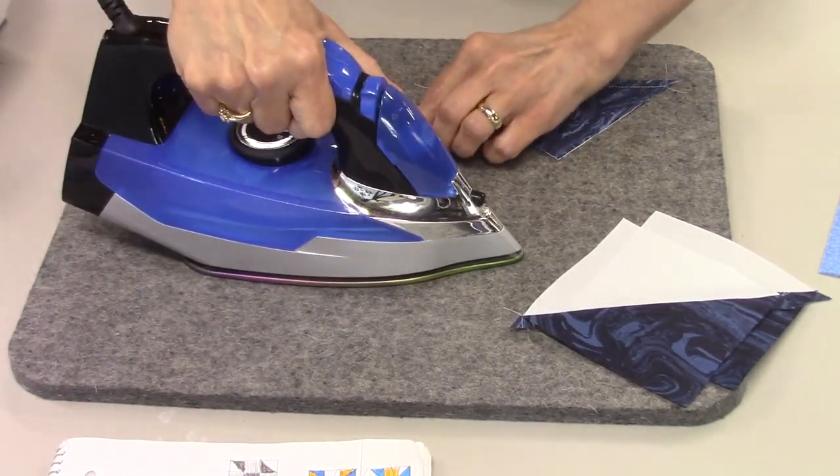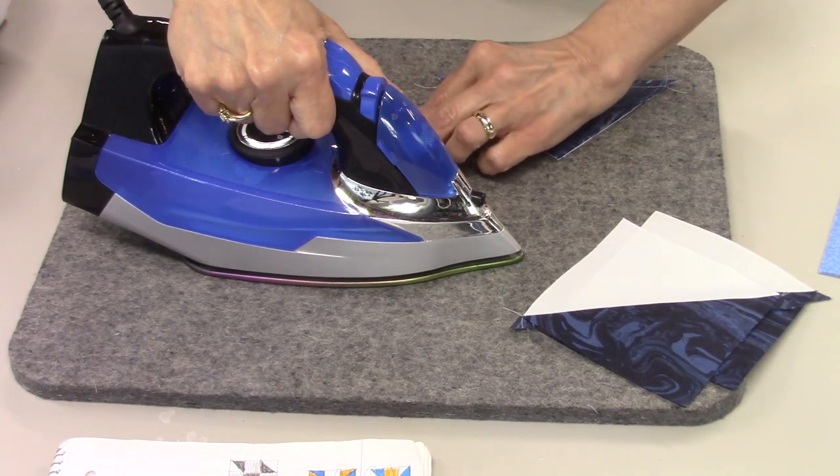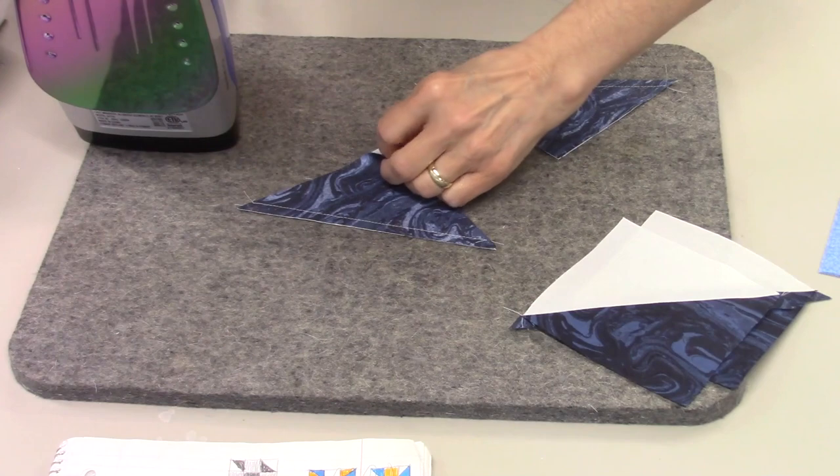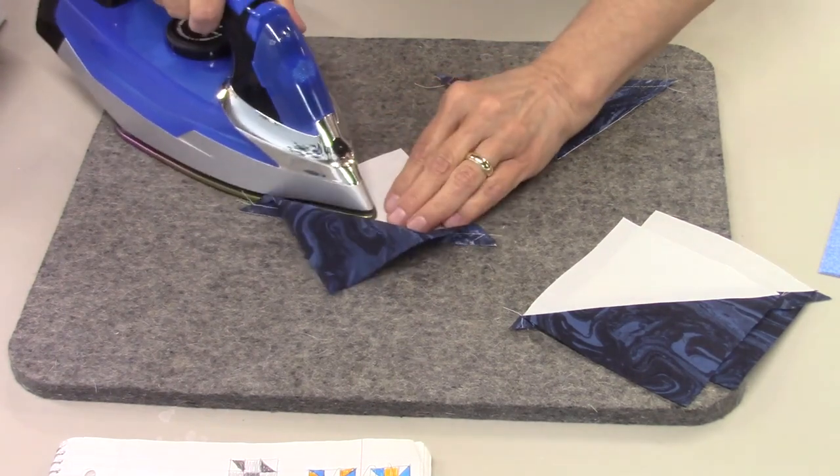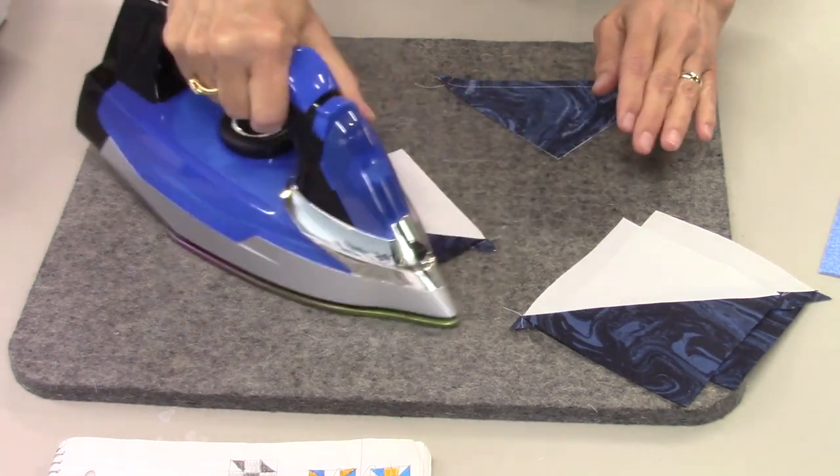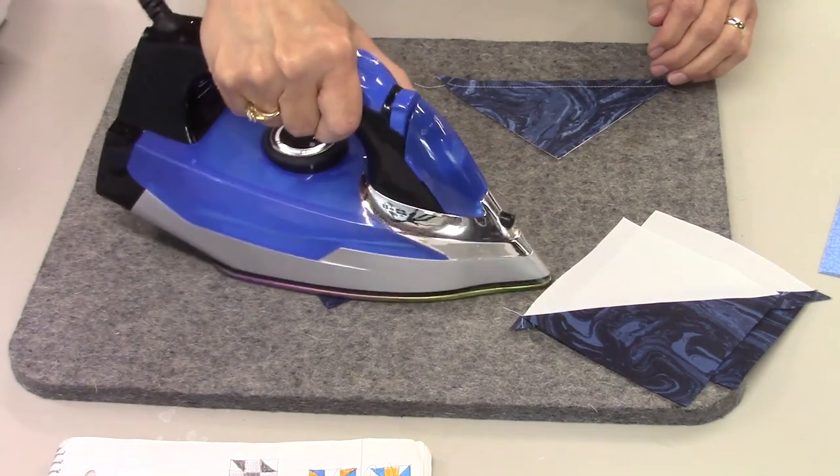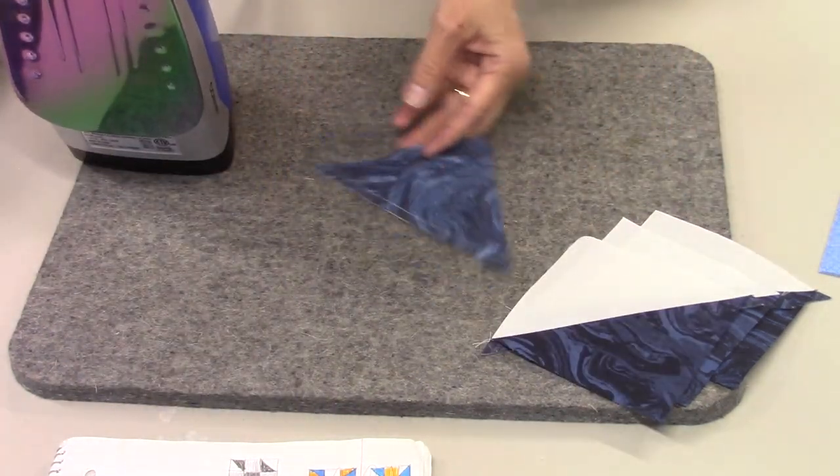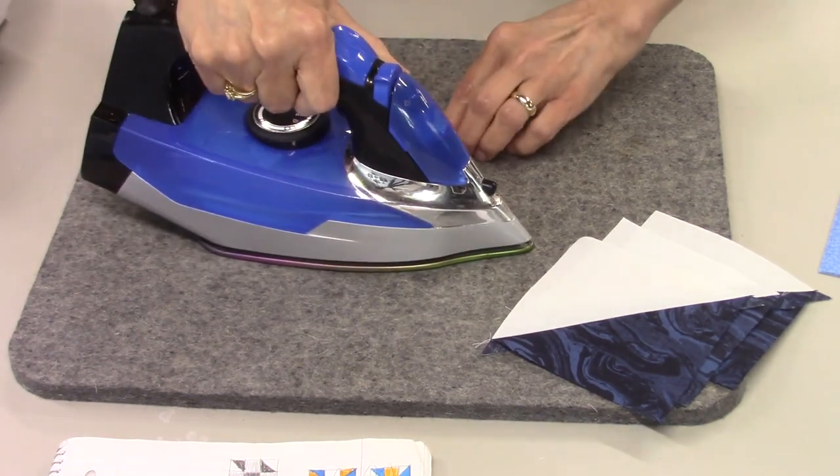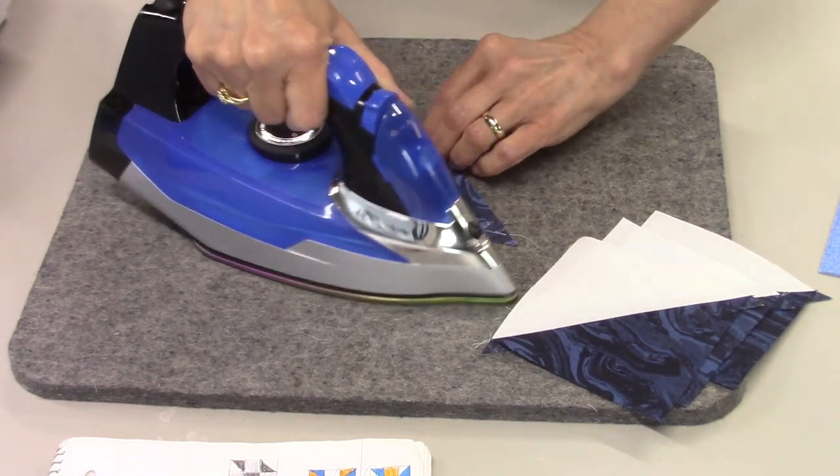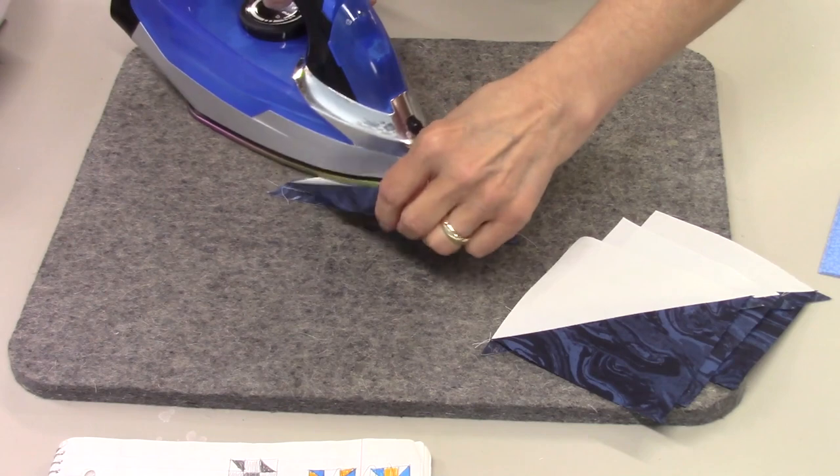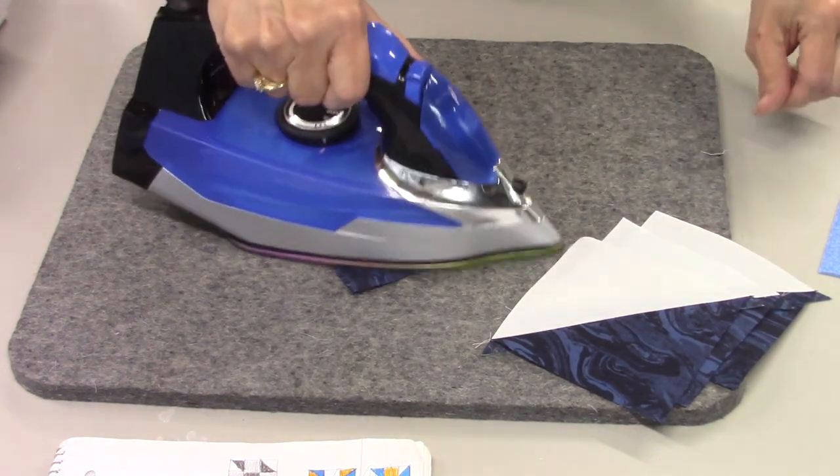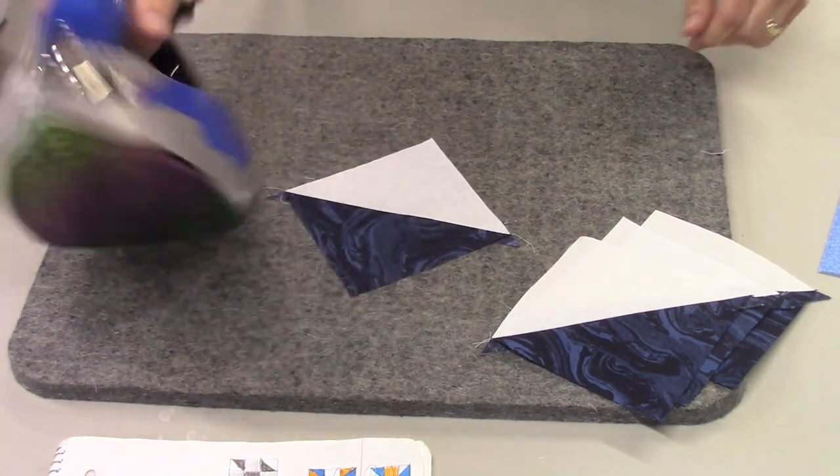This fabric that I'm using is a marbled fabric, but it's a commercial print. It's actually what's left over from the back of the broken star quilt that I made two years ago for my oldest daughter. That's where that came from. I had quite a bit left over from that.